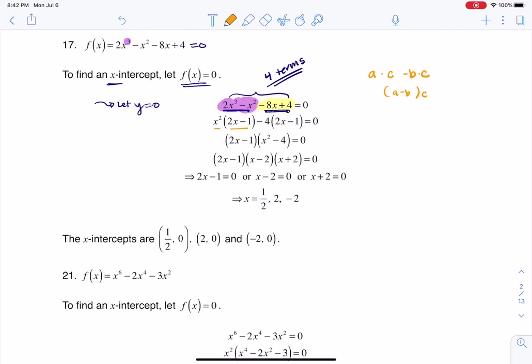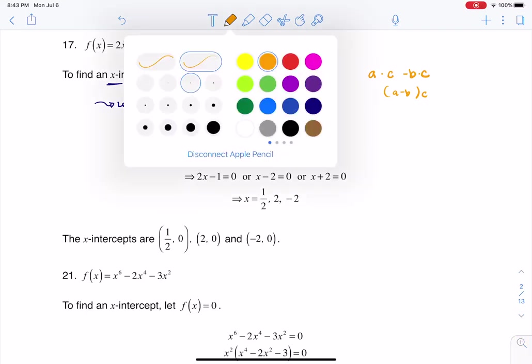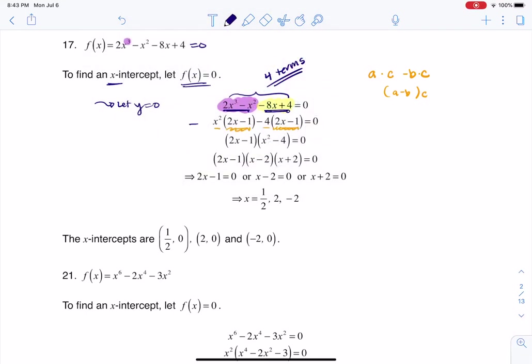So I have a times c minus b times c. I'm going to factor out what is common to these two terms. Now we have two terms rather than four and they have their own GCF of 2x minus 1. I'm going to factor that out and I'm literally left with x squared minus 4. Now x squared minus 4 is quadratic so I can break it into x minus 2 times x plus 2 because it's a difference of squares.